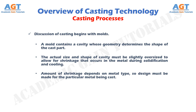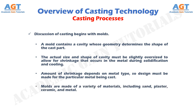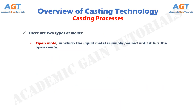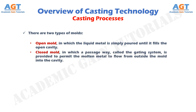Molds are made of a variety of materials, including sand, plaster, ceramic, and metal. There are two types of molds. An open mold, in which the liquid metal is simply poured until it fills the open cavity. And a closed mold, in which a passageway called the gating system is provided to permit the molten metal to flow from outside the mold into the cavity.